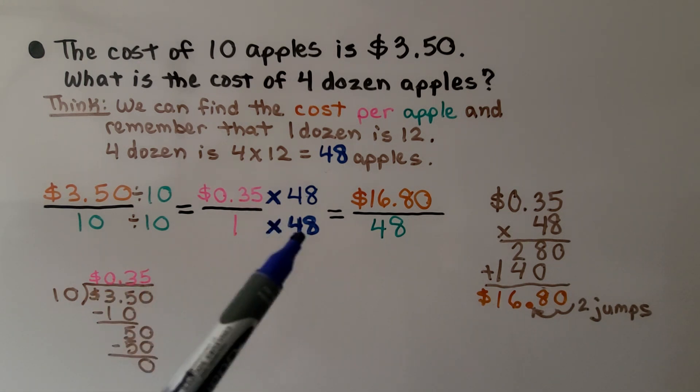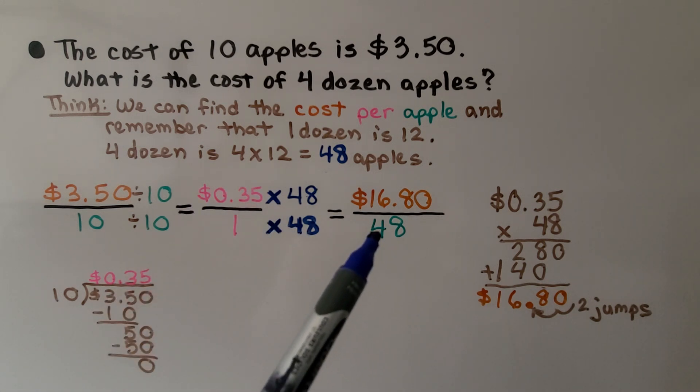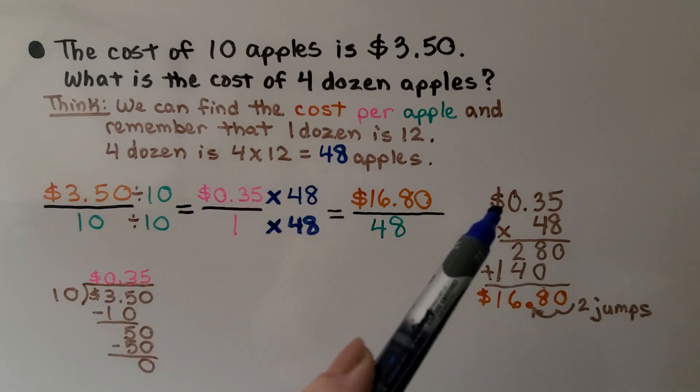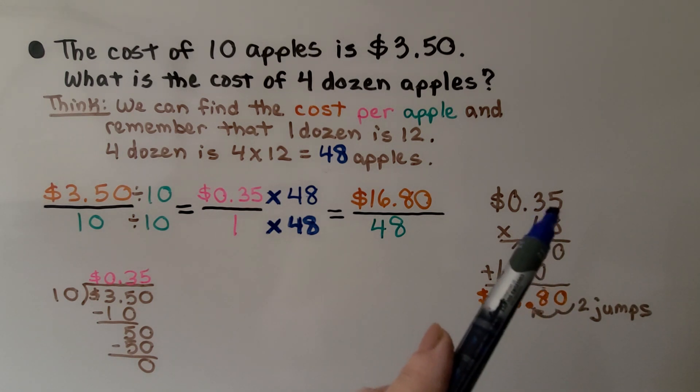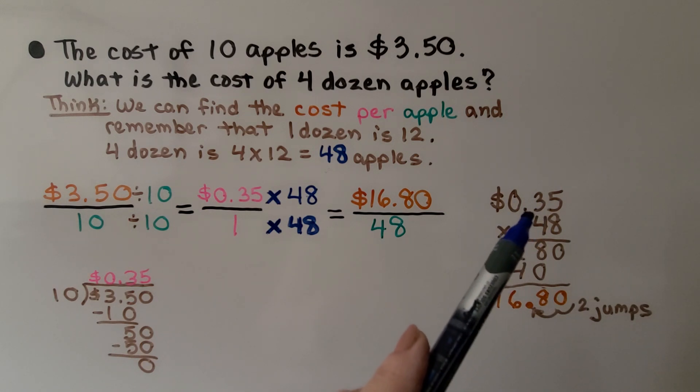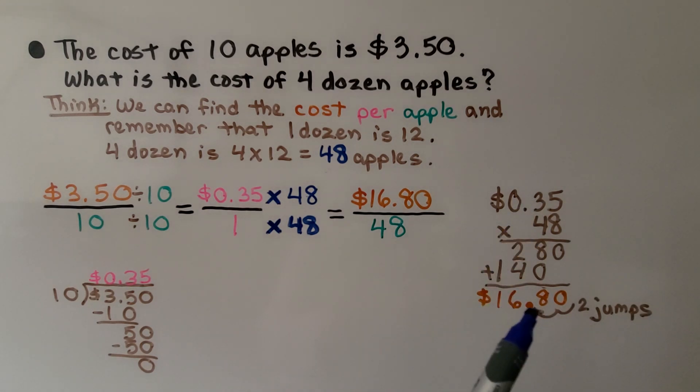It comes out as 35 cents for one apple. Now we can multiply both terms by 48 to find the cost of 48 apples. We do 35 cents times 48 apples and get $16.80. Remember, there's going to be two decimal jumps in this product because we have two decimal places in the problem. That tells us how many will be in the product. It's $16.80 for 48 apples.